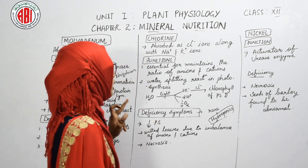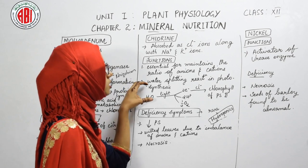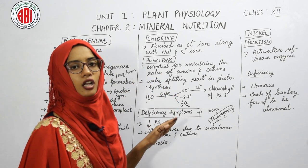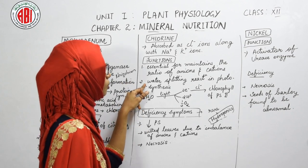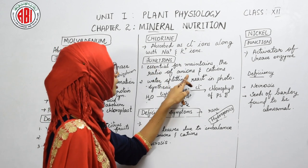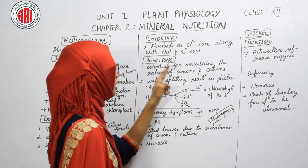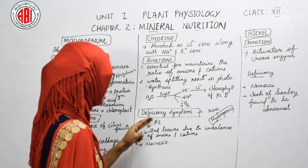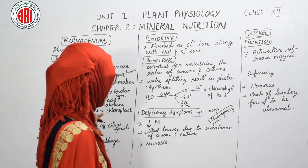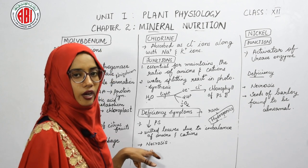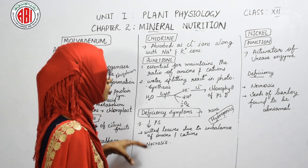In the absence of chloride ions, the rate of photosynthesis decreases because chloride ions are responsible for the photolysis reaction. Additionally, without chloride ions, an imbalance of anions and cations occurs, resulting in wilting of leaves. Another deficiency symptom is necrosis, the death of tissues.